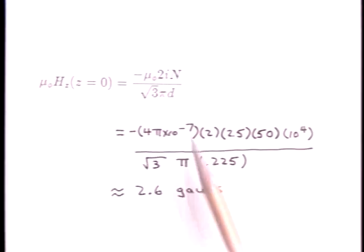With 50 turns, a current of 2 and a half amperes, and a half side dimension of 22 and a half centimeters, the predicted magnetic flux density is 2.6 Gauss. To convert from Teslas to Gauss, we have multiplied by 10,000. We measured 2.4 Gauss.